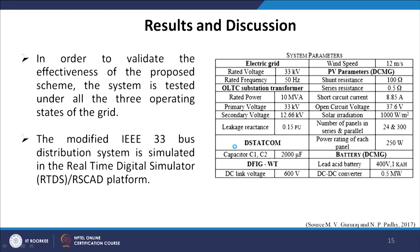In the results and discussion section, we see the outcome: by adding a time delay and allowing all devices to act in different phases of time rather than simultaneously, the slow devices contribute more. In order to validate the effectiveness of the proposed scheme, the system is tested under all three operating states. The modified IEEE 33 bus distribution system is simulated on the Real Time Digital Simulator (RTDS) platform.